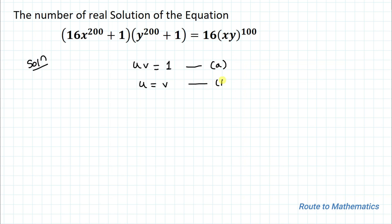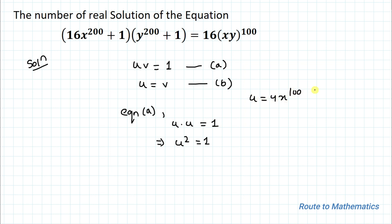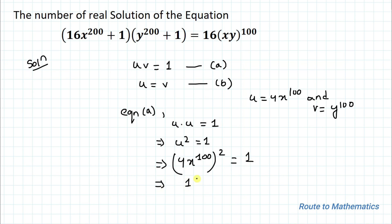Putting the value of v = u into equation A: u·u = 1, so u² = 1. Recalling that u = 4·x^100, we get (4·x^100)² = 1, which gives 16·x^200 = 1, so x^200 = 1/16.